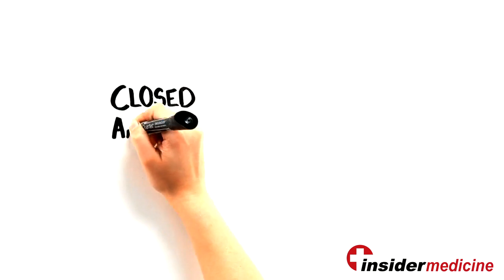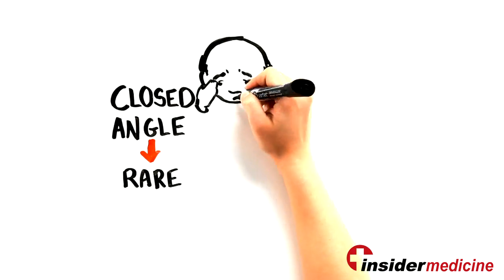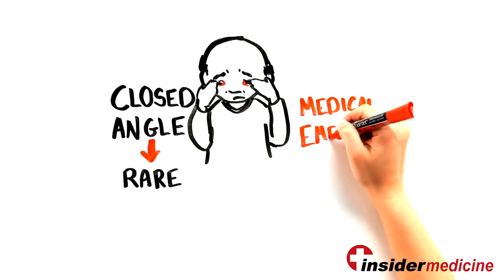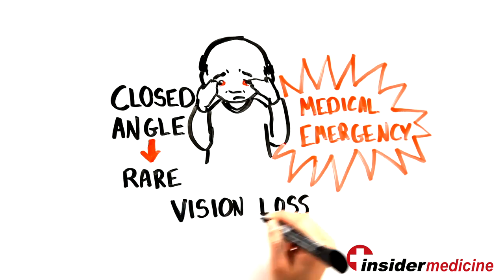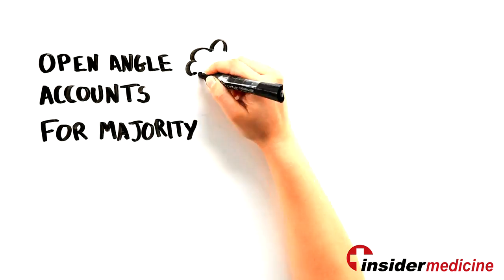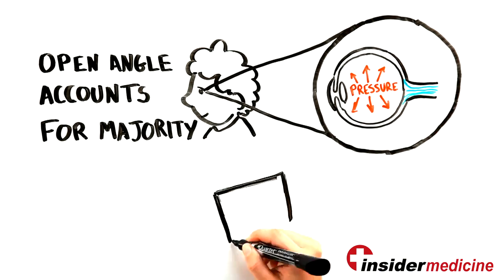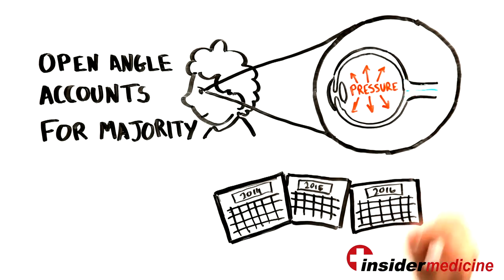While glaucoma caused by a closed-angle is very rare, its presentation is dramatic and it is a true medical emergency as vision can be lost within a matter of hours. Open-angle glaucoma accounts for the vast majority of cases. In these patients, chronically elevated pressure can destroy the optic nerve over a period of many years.